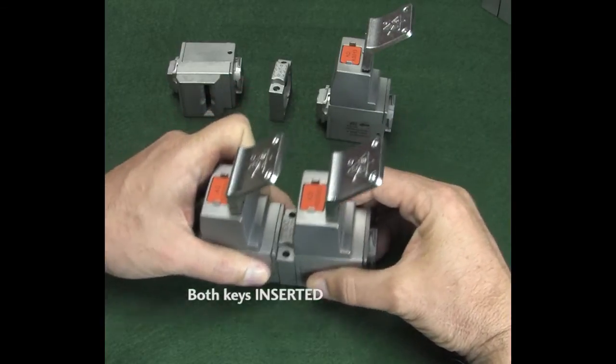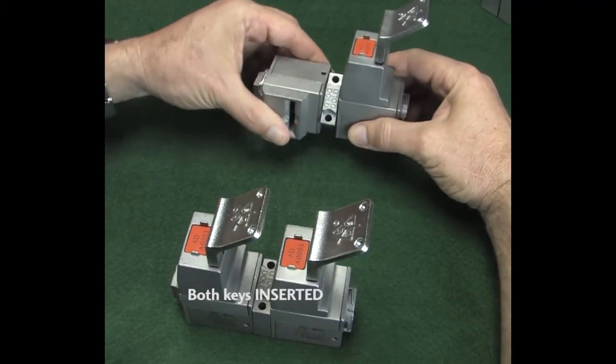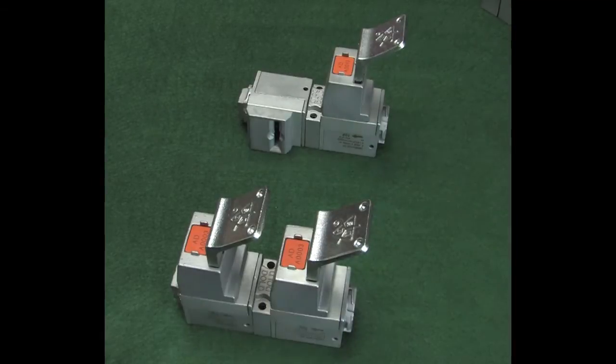If you are coupling a gate actuator module and one of these 1-0 key modules, then if the key is in, the gate latch needs to be out. Again, both modules need to be in the same state for those interlocking fingers to line up.